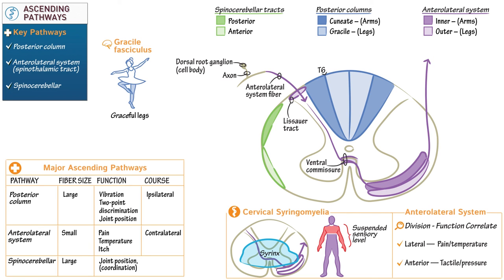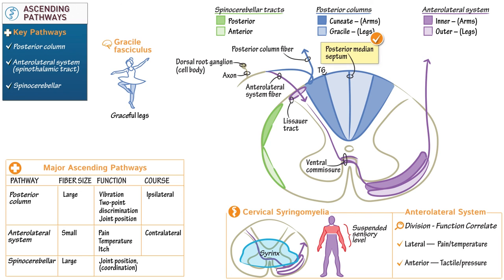For the posterior column pathway, its fibers directly ascend the spinal cord within the ipsilateral posterior column — they do not make a synapse within the spinal cord. Finally, introduce the posterior column demarcation lines: the posterior median septum separates the bilateral sides of the posterior columns, and the posterior intermediate septum separates ipsilateral fasciculi.